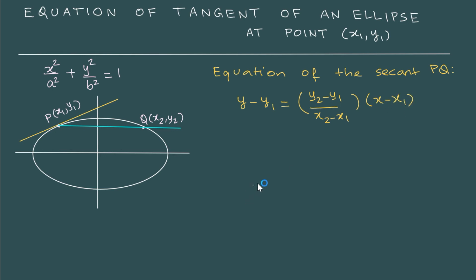The idea here is that if Q approaches point P — if Q is a point very close to point P on the ellipse — the equation of the secant will automatically become the equation of the tangent.